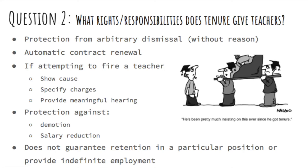So what rights and responsibilities does tenure give teachers? Most states protect teachers in public schools from arbitrary dismissal through tenure statutes. Once a teacher has attained tenure, his or her contract renews automatically each year. School districts may dismiss tenured teachers only by a showing of cause, after providing notice to the teacher, specifying the charges, and providing the teacher with a meaningful hearing. Most tenure statutes require teachers to remain employed during a probationary period. Once this probationary period has ended, teachers in some states earn tenure automatically; in other states, the local board must take action to grant tenure, often following a review of the teacher's performance.